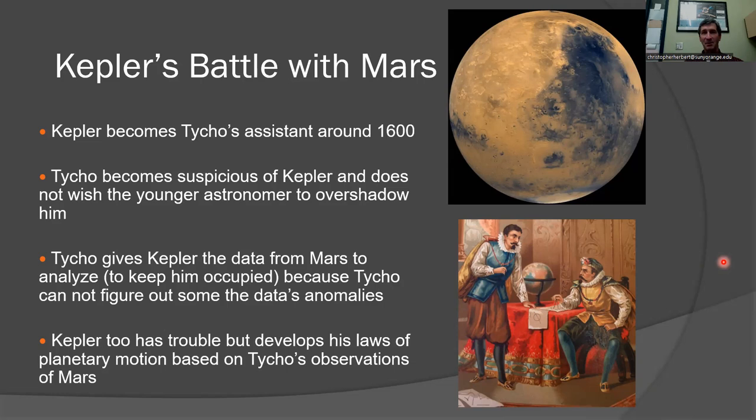If I'm having trouble with this data, I'm going to give it to Kepler, and that's going to keep Kepler busy. This battle with Mars that Kepler had did occupy him for quite some time. But this is where Kepler had the revelation that these orbits are not circular. Galileo believed the planets went around the sun in circular orbits.